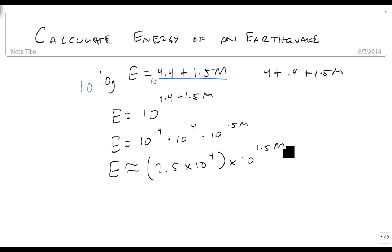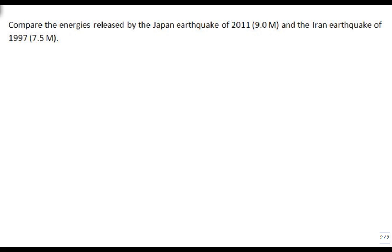And what we're going to do is we're going to look at two different earthquakes: the one in Japan of 2011, which was a 9.0 on the Richter scale, and the Iran earthquake in 1997, which is a 7.5. And we're going to compare these.